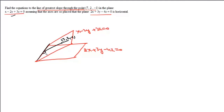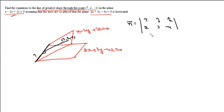First, we'll find the direction ratios of the line of intersection of the two given planes. Let it be n, given by the determinant with i, j, k. For the first plane the coefficients are 2, 3, -4, and for the second plane they are 1, -2, 3. So n will be (9 - (-8))i = 9 + 8... minus 10j, and minus 7k. So a vector in the direction of this line of intersection is i - 10j - 7k.